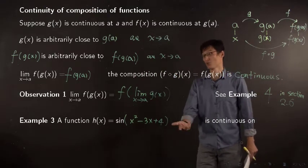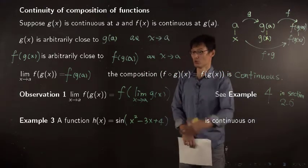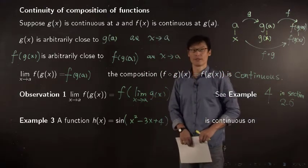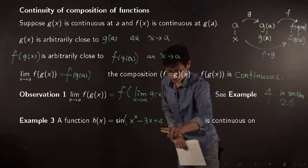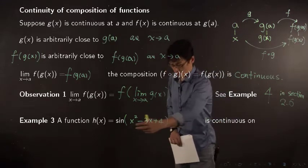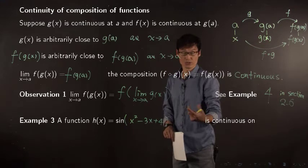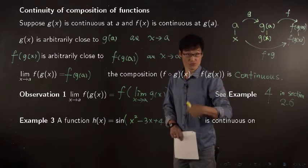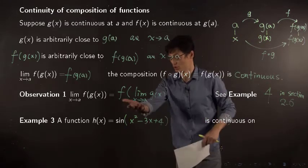Finding the limit directly is quite difficult, but we can use this property. The inside function is continuous and the outside function is also continuous. So we have composition of continuous functions, so we can use this property.